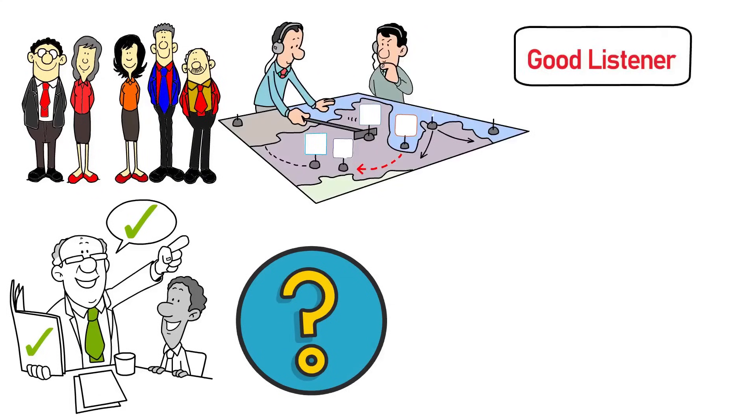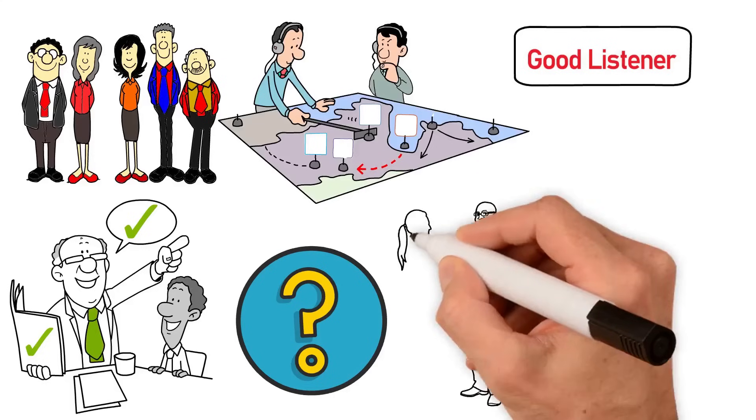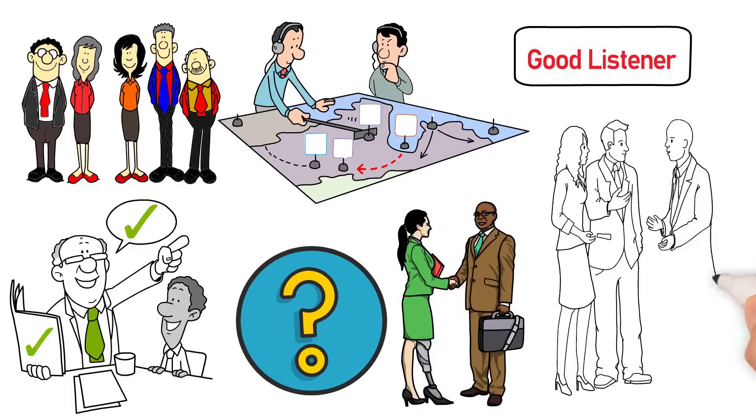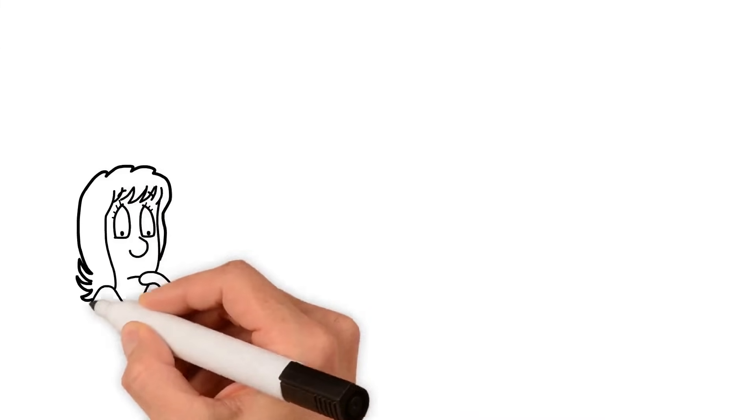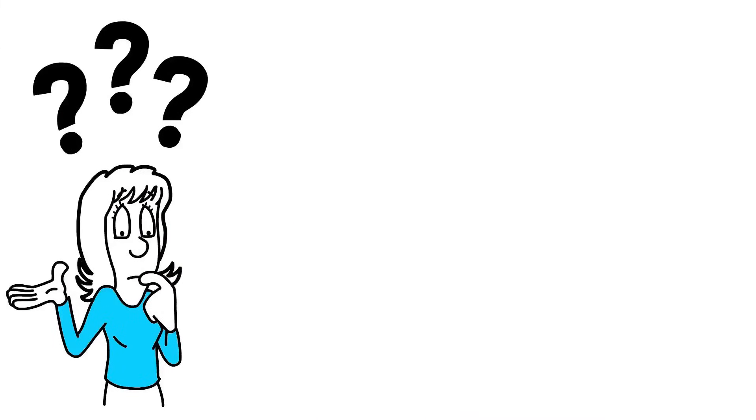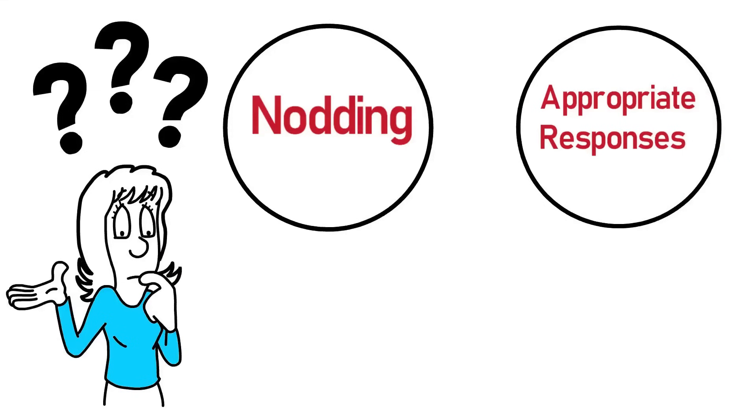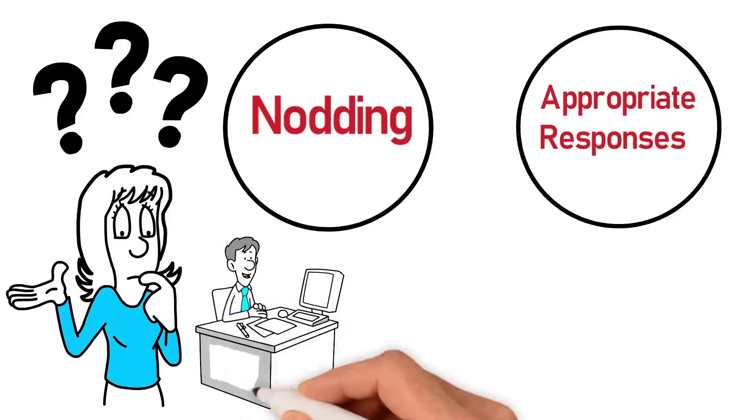Another strategy is to be a good listener. Effective small talk is as much about listening attentively as it is about speaking. Showing genuine interest in what the other person is saying, through active listening cues like nodding and appropriate responses, can make the conversation more engaging for both parties.